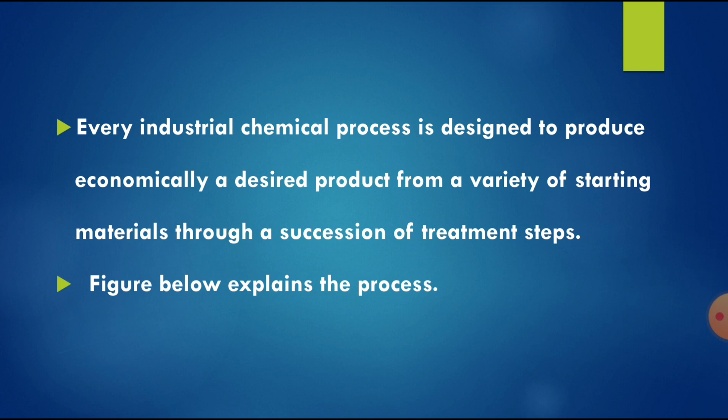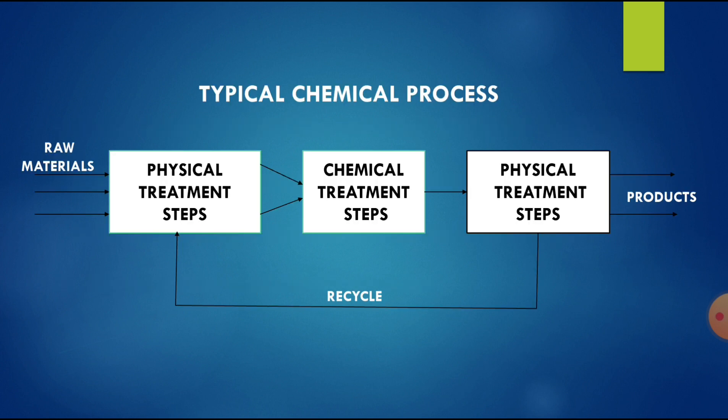Every industrial chemical process is designed to produce economically a desired product from a variety of starting materials through a succession of treatment steps. The typical chemical process involves physical treatment steps, then chemical treatment steps, and then physical treatment steps again. Raw materials enter into the physical treatment steps, then chemical treatment steps, and then undergo further physical treatment steps to release the products.